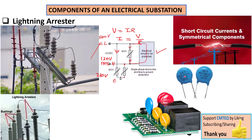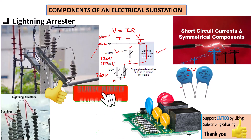This MOV here is marked 10D471. The 10D basically stands for the size — this is a 10mm MOV — and the 471 means the clamping voltage is 471, which basically means 470 volts. As soon as the voltage exceeds 470 volts, this MOV is going to start clamping. You should use it on 300 volts or something less. If you exceed 470 volts, it's going to start clamping and deny current to your equipment, thereby protecting it.